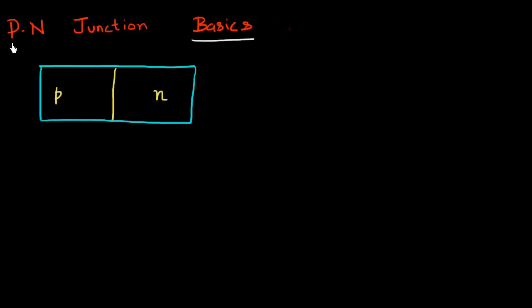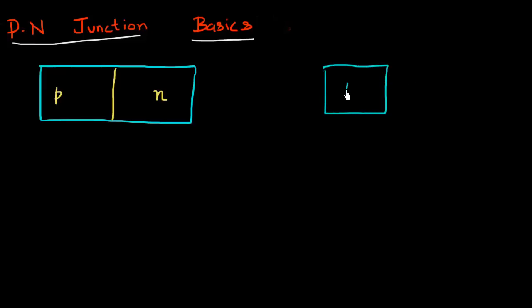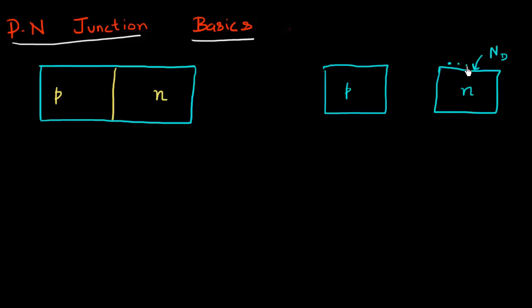I want to touch upon some basics of PN junction or PN diode in this video. One way to think about this PN junction is to think about these individually doped P and N regions. I have these two semiconductor blocks. One is N type, and it has donor atoms added to the lattice of the semiconductor. They have this extra electron which is given to the lattice, and what it results in is an excess population of electrons present in the conduction band of this N type semiconductor.